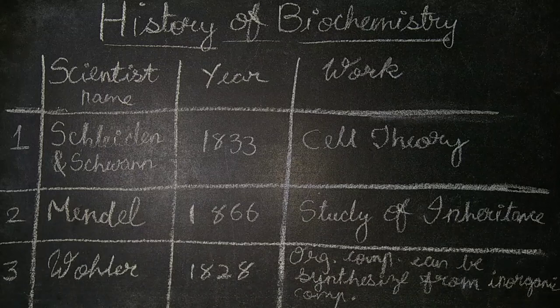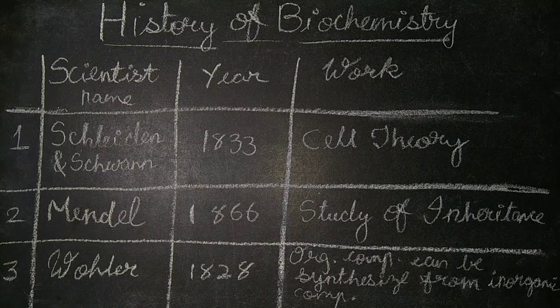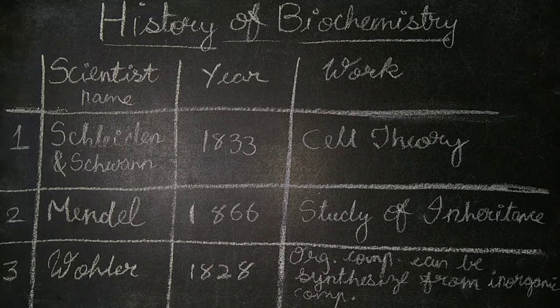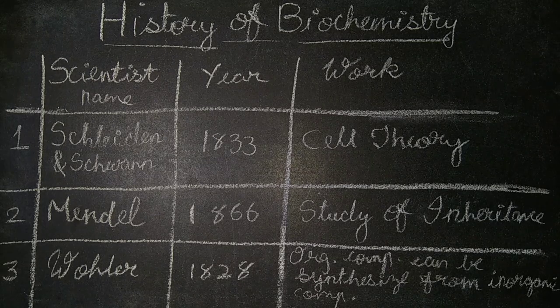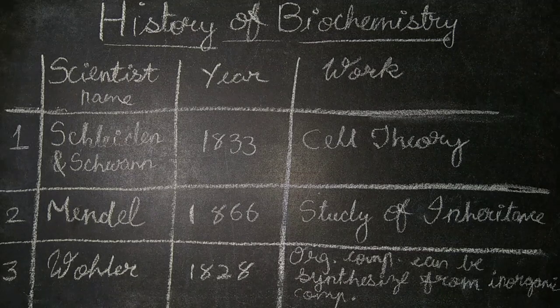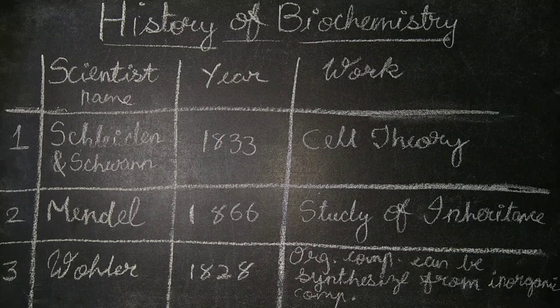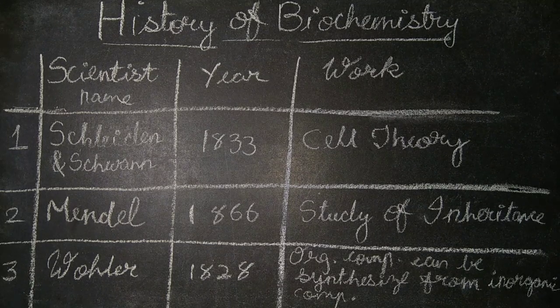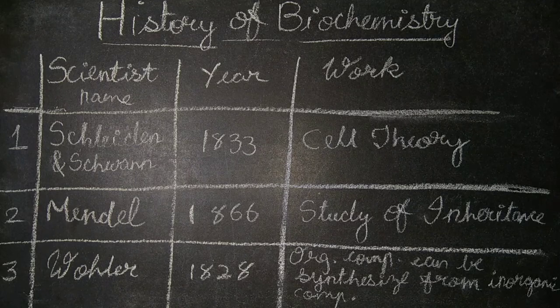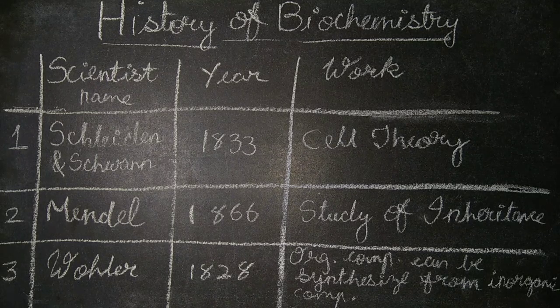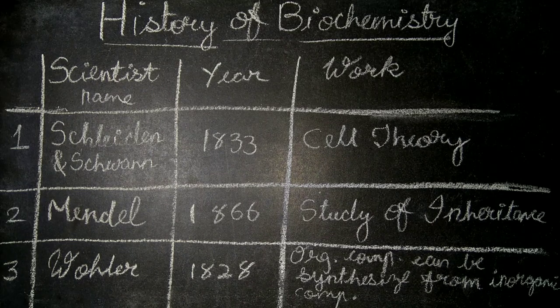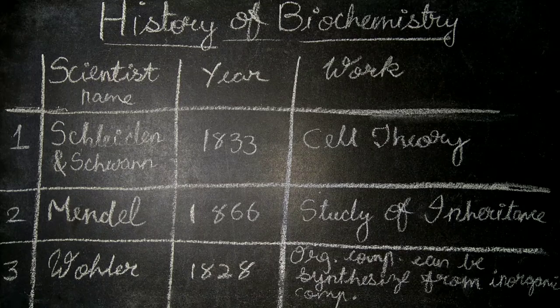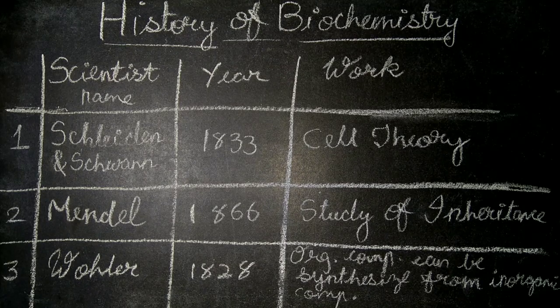Now let us discuss the history of biochemistry. Here I have given a table of scientist names and their work. The first is Schleiden and Schwann in 1833, who discovered cell theory. Second is Mendel in 1866, who discovered the theory of inheritance. Third is Wöhler in 1828, who discovered that organic compounds can be synthesized from inorganic compounds.